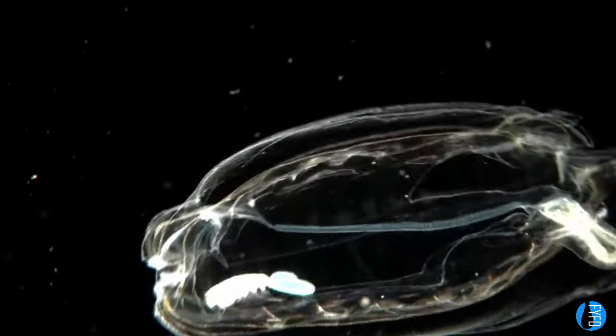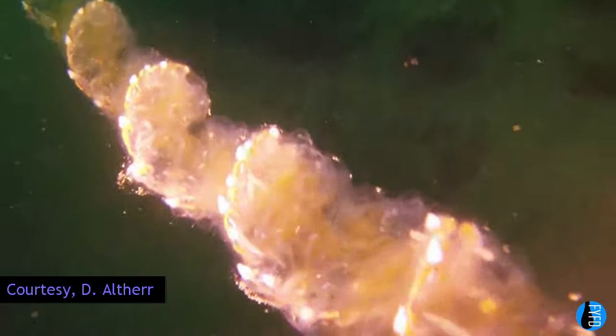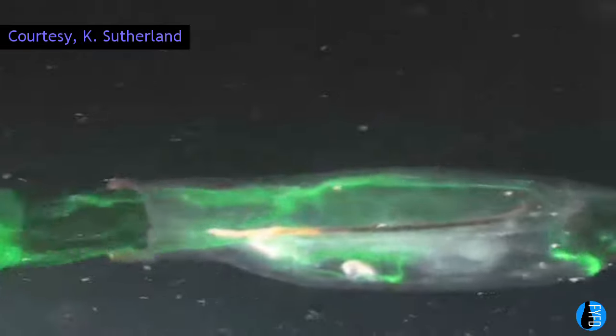and then push the water out the other side for propulsion. Salps spend part of their life as solitary swimmers, but they also join together into chains of tens or hundreds of salps, stretching meters long. The key to this help swimming, and to its efficiency, are the vortex rings it produces.